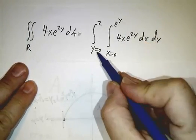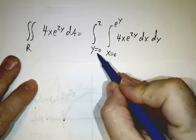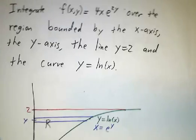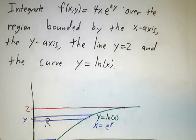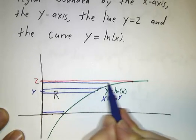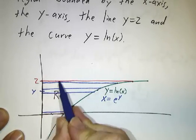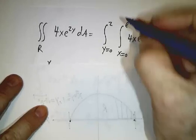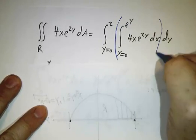So our integral is going to involve x goes from 0 to e to the y, and then the lowest row is at y equals 0. The highest row is at y equals 2. So y goes from 0 to 2. The inner integral is telling you what is happening in a single row. The outer integral is putting all the rows together.